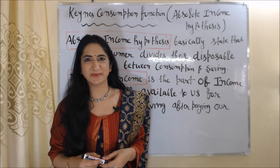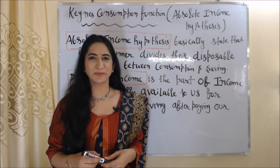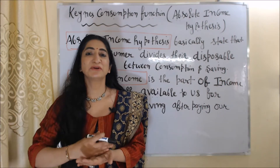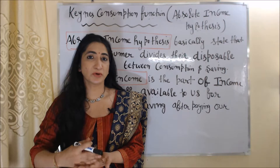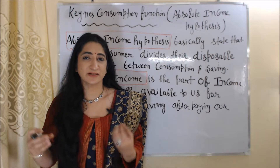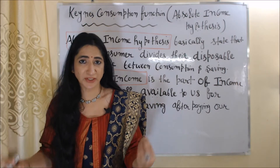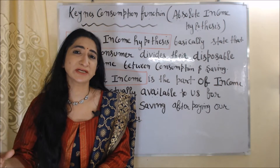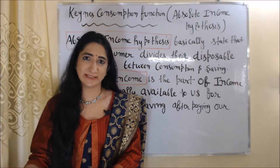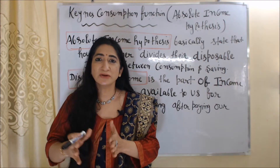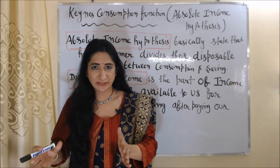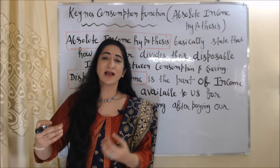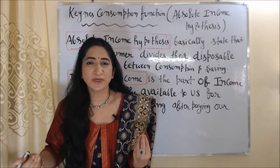Hello everyone, my name is Mini Sethi. I hope you all are staying healthy. Today we are going to talk about Keynes' consumption function, or we can say the Absolute Income Hypothesis. The Absolute Income Hypothesis basically states how a consumer divides their disposable income between consumption and saving.